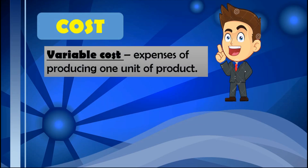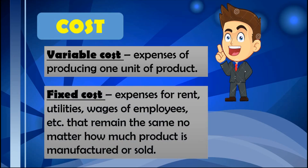Variable cost refers to the expenses of producing one unit of product. It includes expenses on raw materials, direct labor, and more — the variable cost per unit is used. Fixed cost refers to the expenses for rent, utilities, wages of employees, and many more that remain the same no matter how much product is manufactured or sold.